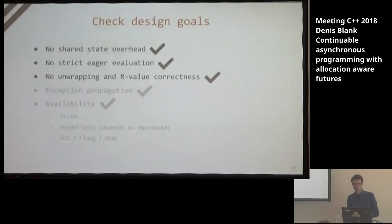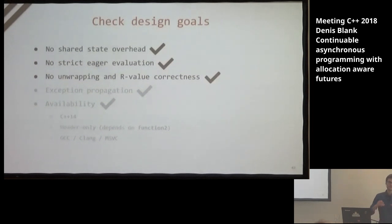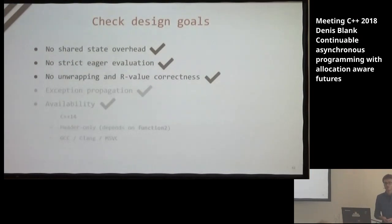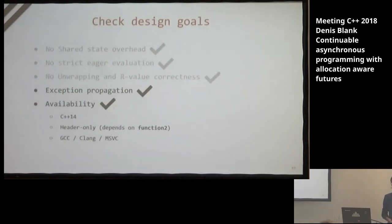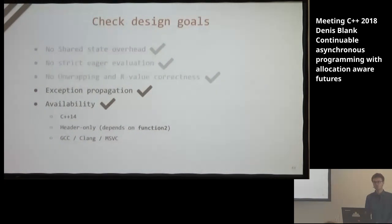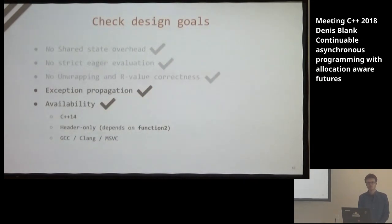Now checking our design goals: no shared state overhead — check. No strict eager evaluation — we use lazy evaluation with evaluation-on-request semantics, which could also be converted to eager if desired. We unwrap arguments automatically, and .then is only callable from an R-value context, fixing R-value correctness. Exception propagation is fixed — we effectively route exceptions to the next available failure handler. Availability is quite good: I implemented it as a C++14 library that's header-only, depends only on my function2 library (also header-only), and compiles on all major fairly-new compilers.